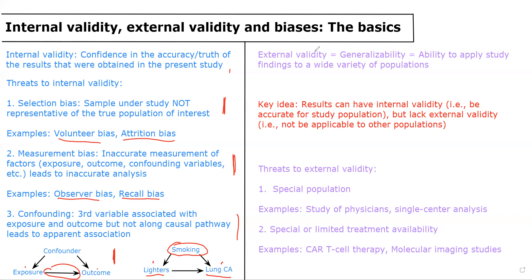So we've touched on internal validity. Now let's move to external validity, another word for which is generalizability. External validity is what is our ability to apply these study results to a wide variety of populations or to other populations of interest. One key idea is that results can have internal validity — they can be accurate for the study population that was observed — but could definitely lack external validity, meaning they may not be applicable to other populations. It may be true within the study population but not when applied to other populations.